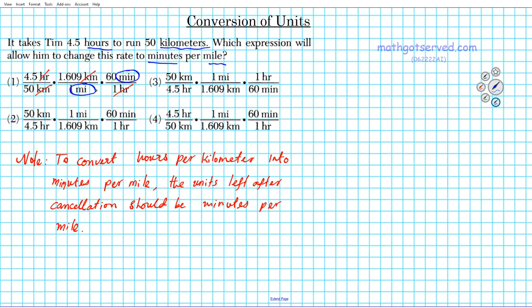For option number one, the resulting unit is minutes per mile. That's exactly what we want, so the answer to this question is option one.